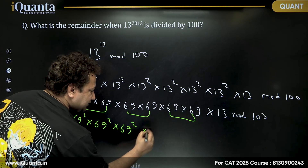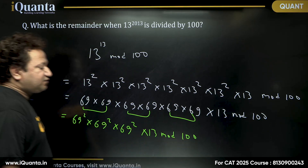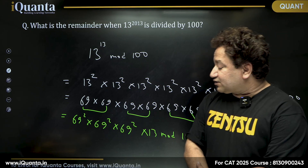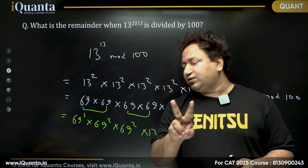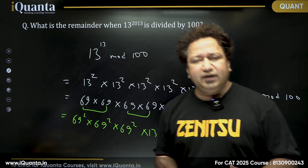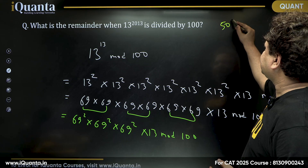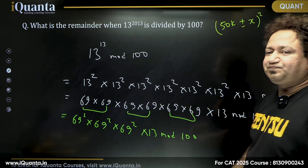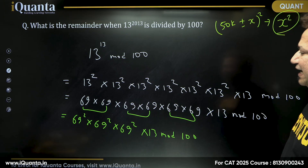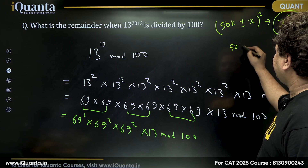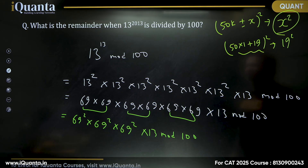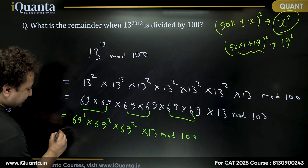To find 69², I'll use the Mool Varga Siddhant theorem: if a number is x more or x less than a multiple of 50, its last two digits are the same as those of x². Here, 69 = 50 × 1 + 19, so the last two digits of 69² equal those of 19². Since 19² = 361, the last two digits are 61. So each 69² gives 61 — and we have three of them.